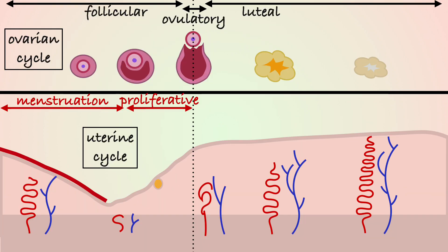The proliferative phase follows menstruation when the functional layer proliferates and thickens in response to rising estrogen levels and lasts until about day 14.